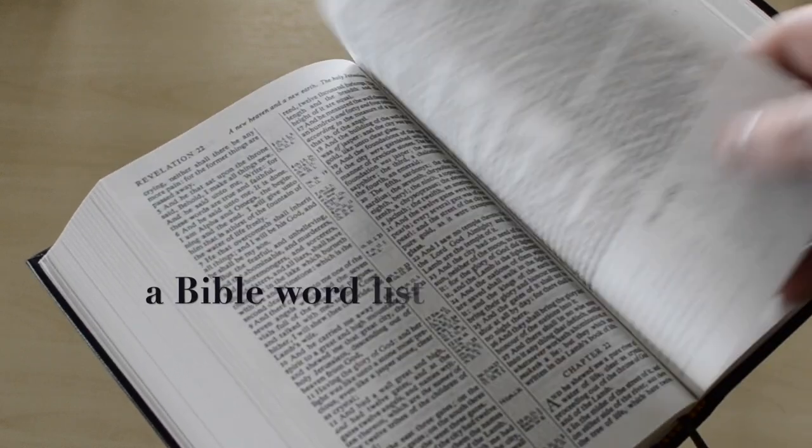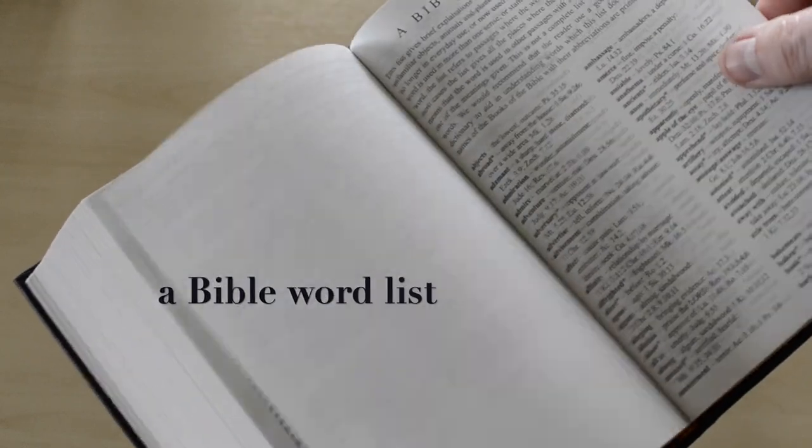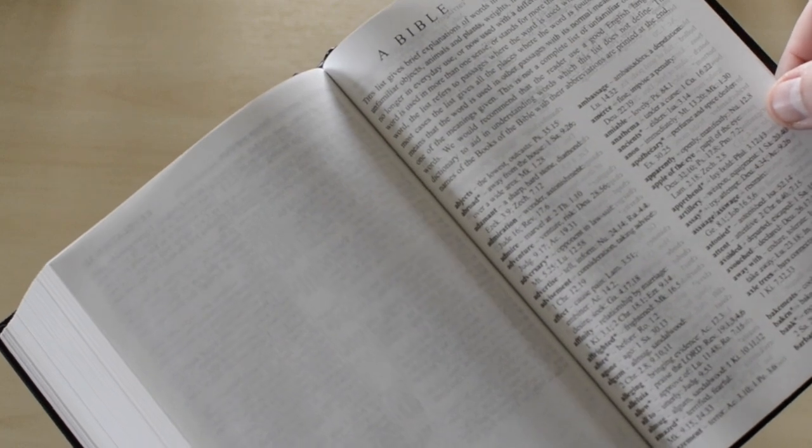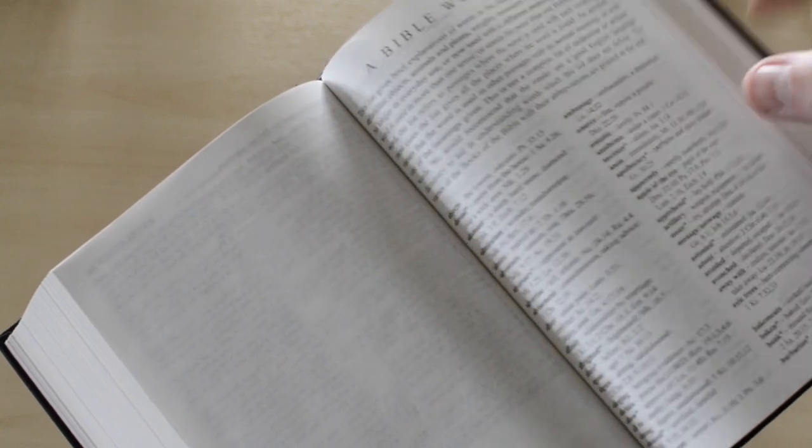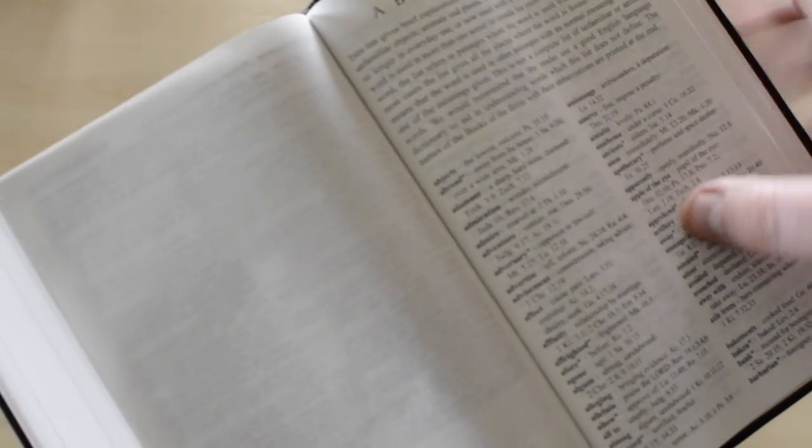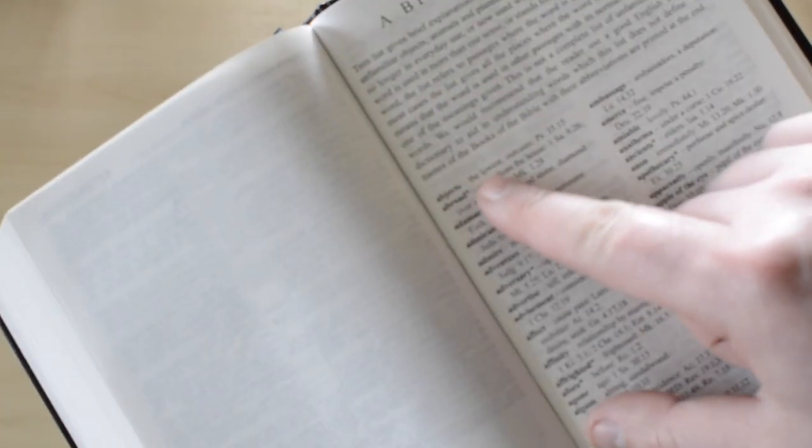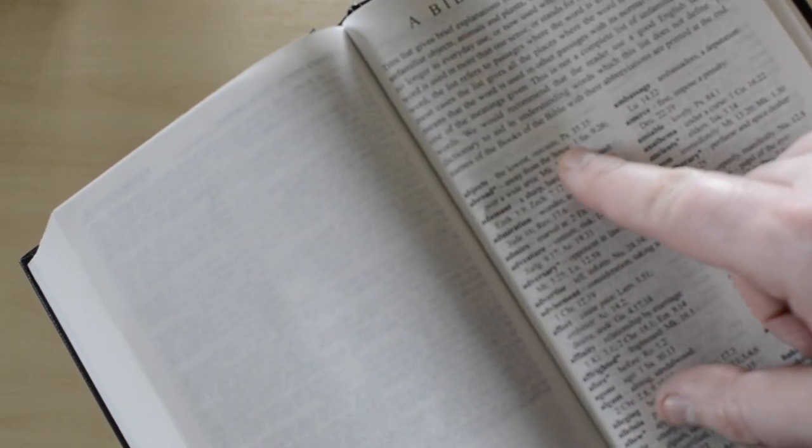You're gonna find a Bible word list. Basically, it's going to be like a dictionary, basically, of the King James. For example, abjects is the lowest of outcasts.